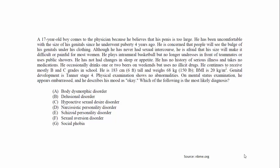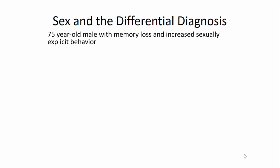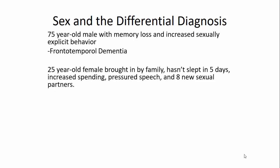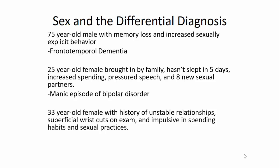Here are some examples of how sexual behavior can help in your differential diagnosis within psychiatry. A 75-year-old male with memory loss and increased sexually explicit behavior — you would be thinking about Pick's disease, or frontotemporal dementia. A 25-year-old female brought in by family, who hasn't slept in five days, has increased spending, pressured speech, and eight new sexual partners recently — we're thinking about a manic episode and bipolar disorder. A 33-year-old female with history of unstable relationships, superficial wrist cuts on exam, and impulsive spending habits and impulsive sexual practices — this can be seen in borderline personality disorder.